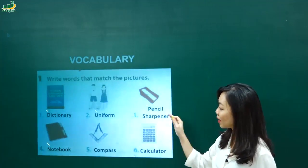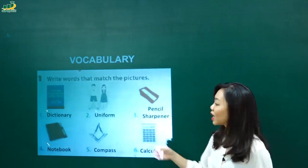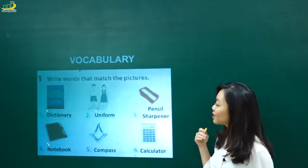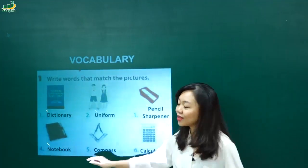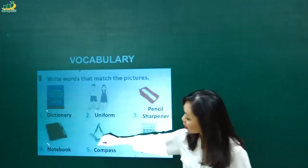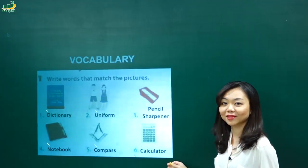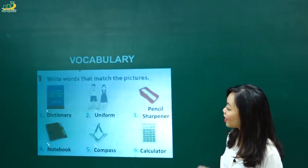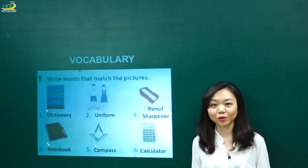Cô sẽ giúp các em đọc lại từng từ một nhé. Dictionary. Dictionary. Good. Uniform. Uniform. Pencil sharpener. Pencil sharpener. Good. Notebook. Notebook. Compass. Compass. Good. And calculator. Calculator. Ok. Ok. Tốt rồi. Vậy đây là những cái vật dụng, đồ dùng, những cái gì liên quan đến việc học tập của chúng ta. Đúng không nhỉ?